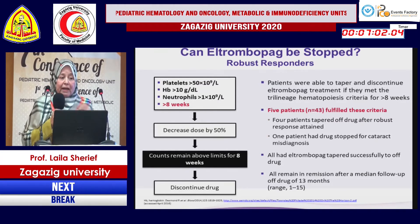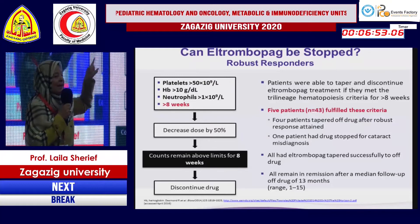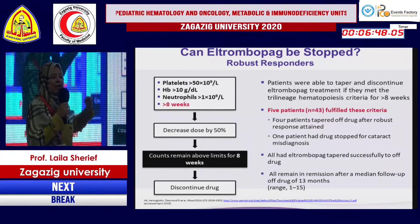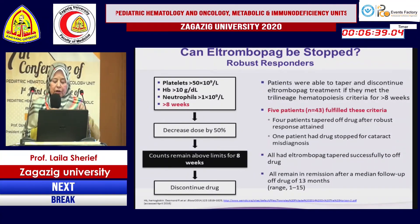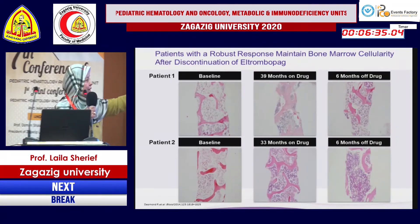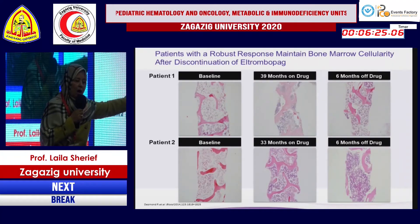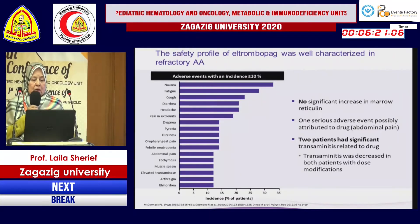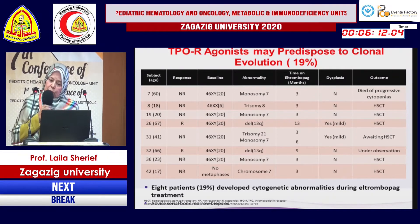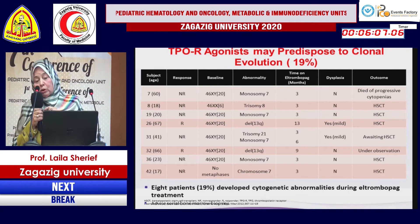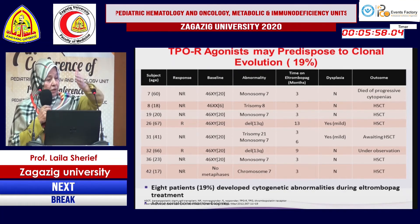Five patients were able to stop eltrombopag. The criteria for stopping included a platelet count greater than 50,000, hemoglobin greater than 10 grams, and absolute neutrophil count greater than 1,000. Four patients successfully stopped eltrombopag. Bone marrow cellularity improved over three years, and six months after stopping eltrombopag, improvements persisted. Side effects were mild, with only two patients developing transient elevated transaminases. However, 16% of patients developed clonal abnormalities, so the treatment is not perfect.